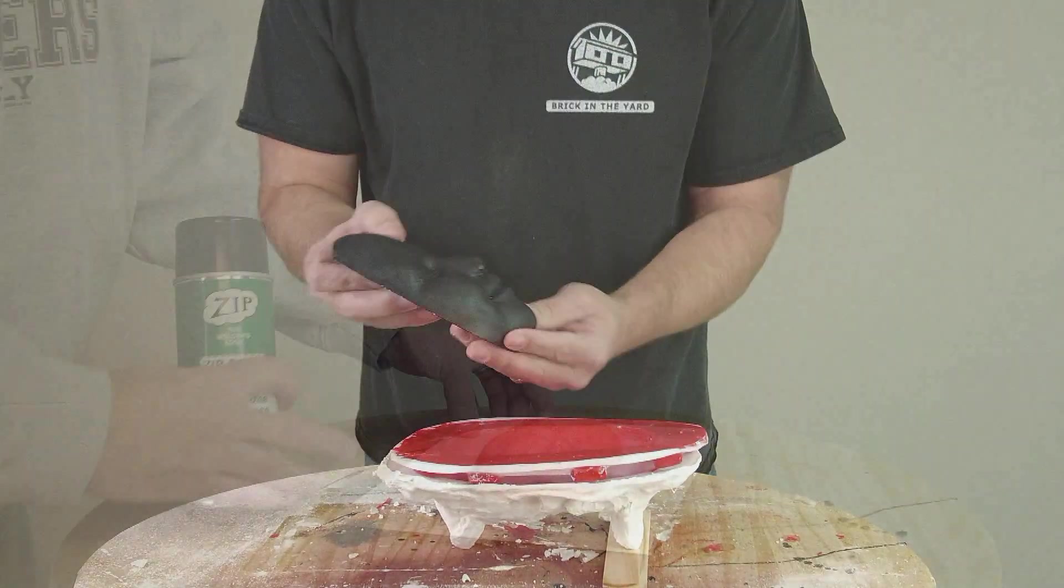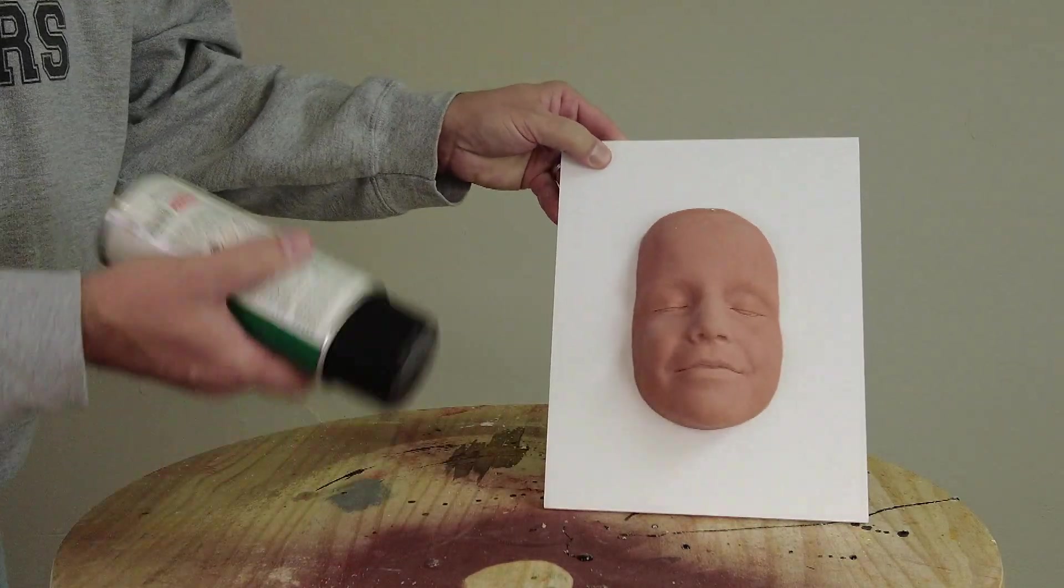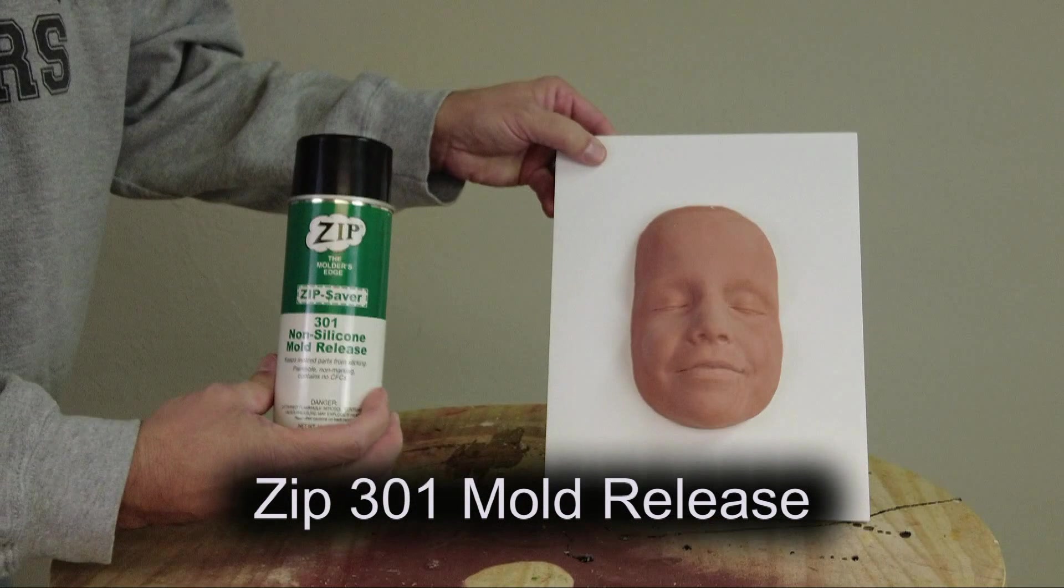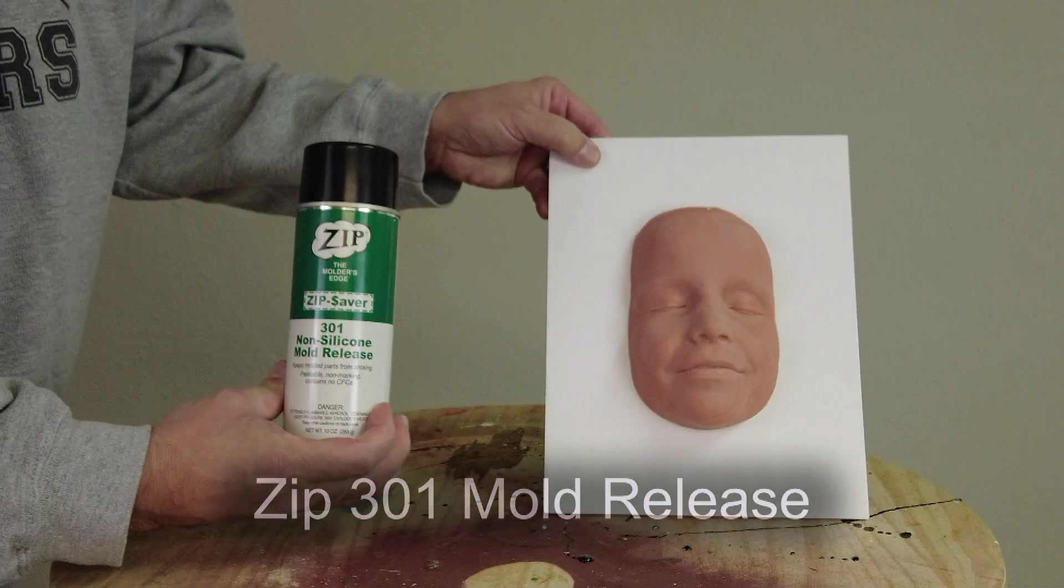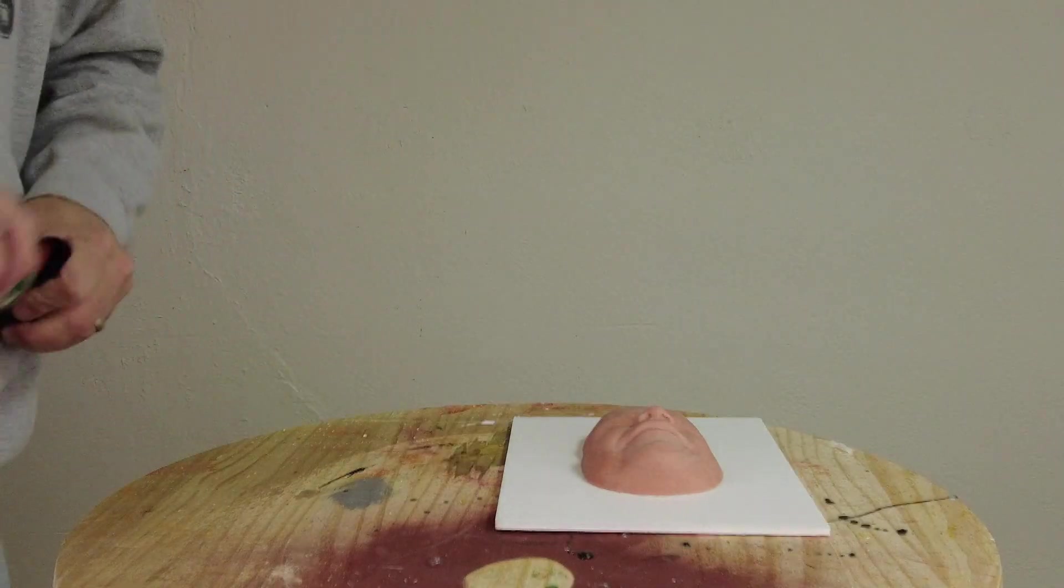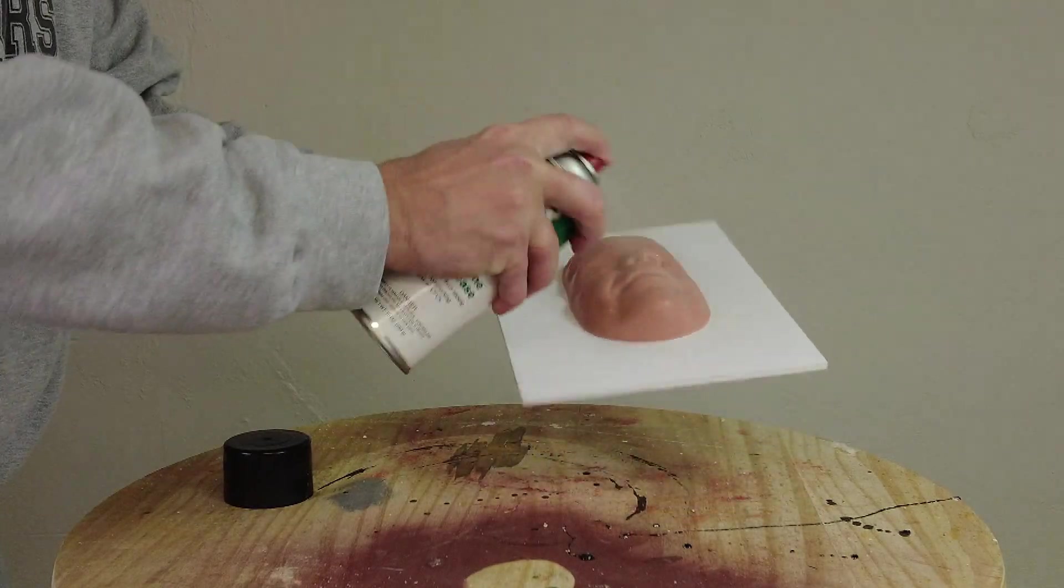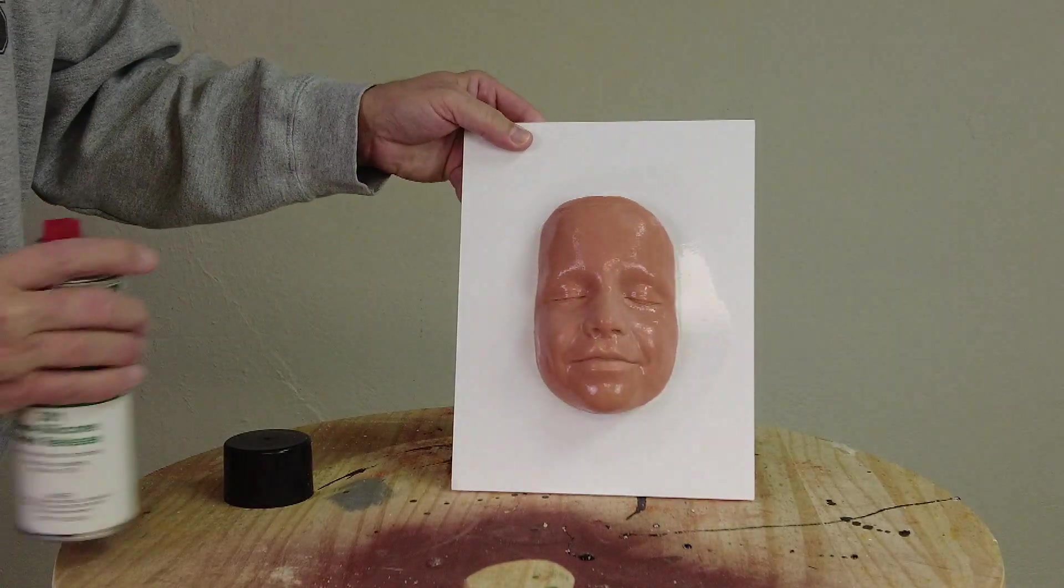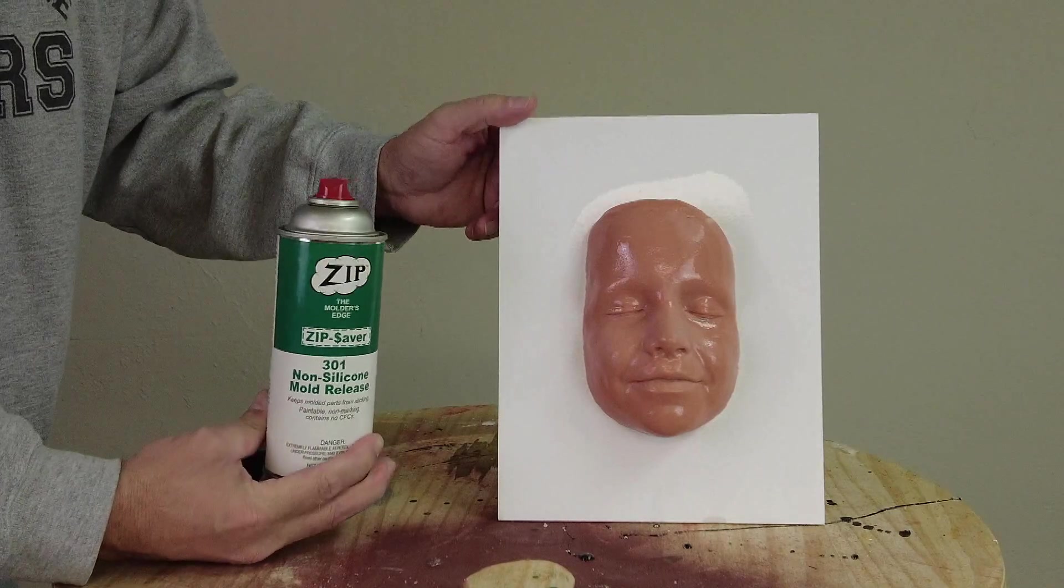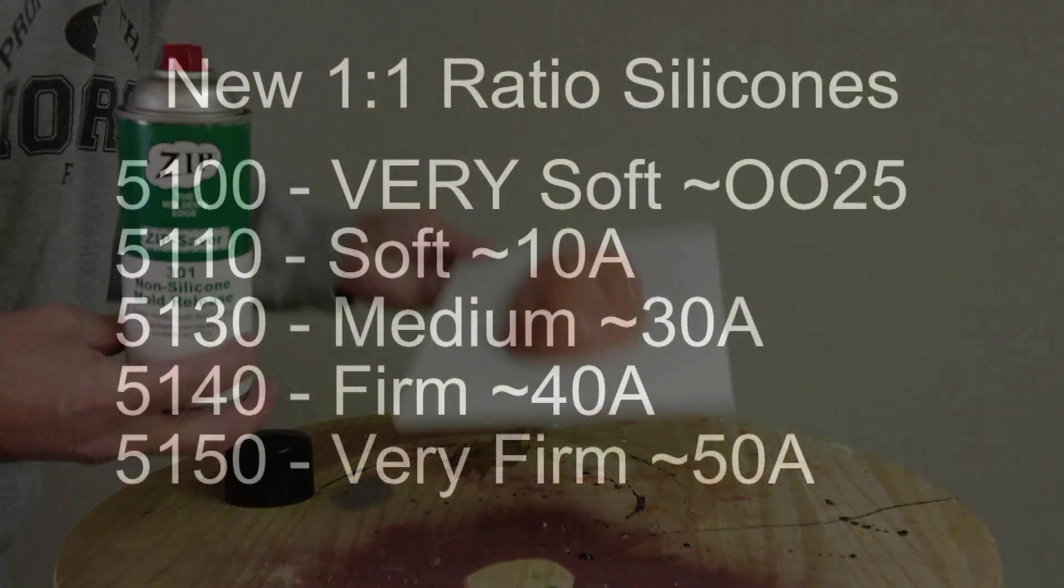This method is great for reproducing face casts. This is an old resin cast of my daughter Raya. We've secured the resin face cast to a piece of foam core board with hot glue and we're releasing it using the Zip 301 mold release. This is a very basic non-silicone oil release agent, and that's really important. Anytime you're making a silicone mold, make sure your mold release does not contain silicone oil. If it does, it could cause the silicone to bond to your pattern or inhibit when it comes in contact with the wrong type of silicone oil.